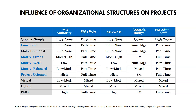Let's look at the structures in blue that we've already started discussing. In a functional organization, the project manager's authority is going to be little to none — the functional managers have much more authority. The project manager's role may be part-time, there may be little or no resources dedicated to those projects, and the functional manager controls the budget. Any administration staff for the project manager would typically be part-time. In these types of organizations, it's going to be very difficult for the project manager to be successful — it requires a lot more coordination and effort.